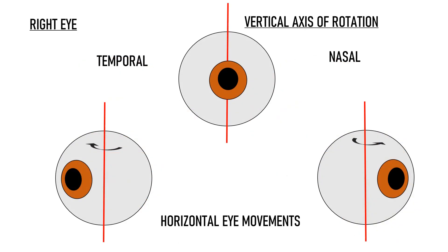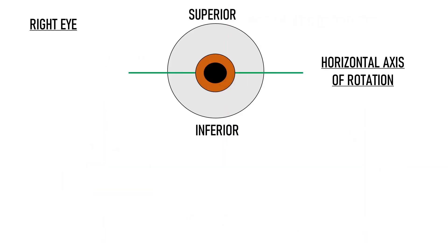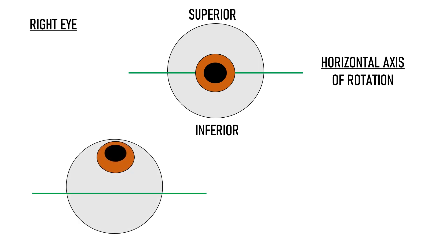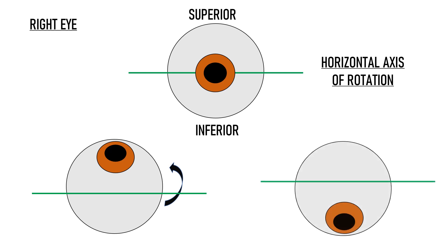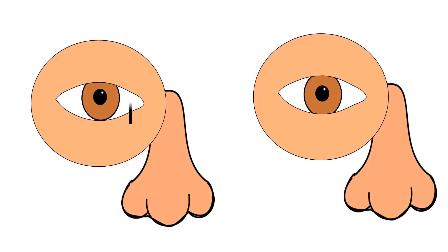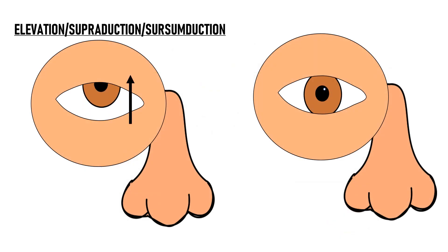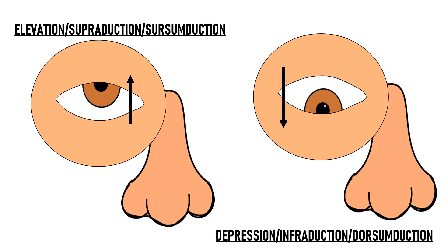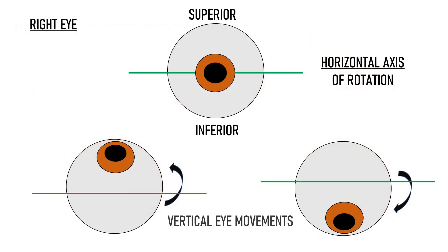Adduction and abduction are horizontal duction movements. When the eye moves along the horizontal axis of rotation, it leads to vertical eye movements. The eye can either rotate upward or downward. This vertical rotation upward is known as supraduction, sursum-duction, or elevation. The vertical rotation downward is known as infraduction, dorsum-duction, or depression. So supraduction and infraduction are vertical duction movements.